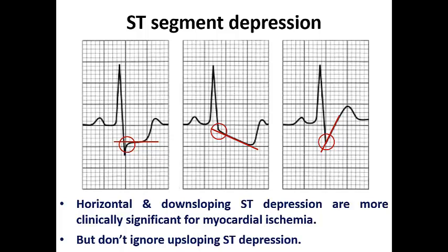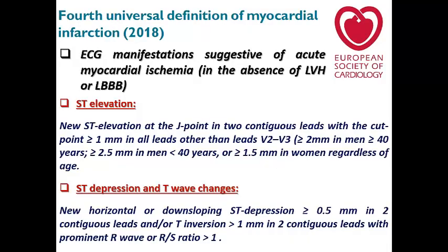We usually consider horizontal and downsloping to be more clinically significant for myocardial ischemia, but don't ignore upsloping depression — some cases of myocardial ischemia may be associated with upsloping depression. A famous example is the DeWinter syndrome, which shows upsloping ST depression with hyperacute T waves. From the fourth universal definition of MI (2018), ST depression is defined as new horizontal or downsloping — upsloping excluded — more than or equal to 0.5 mm in two contiguous leads, and/or T wave inversion more than 1 mm in two contiguous leads with prominent R wave or R/S ratio more than one.